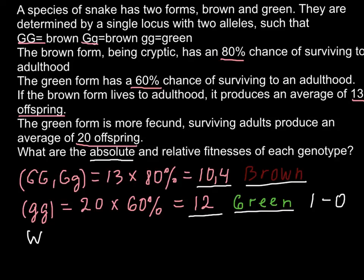So in this case, we have to find the most fit genotype or phenotype, that is green, and we have the number 12 here, and this would equal to 1. In other words, we can just divide it by itself: 12 divided by 12 would equal to 1.